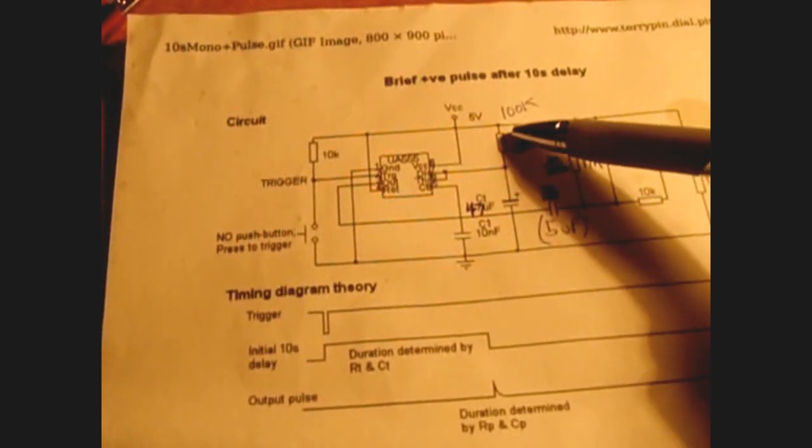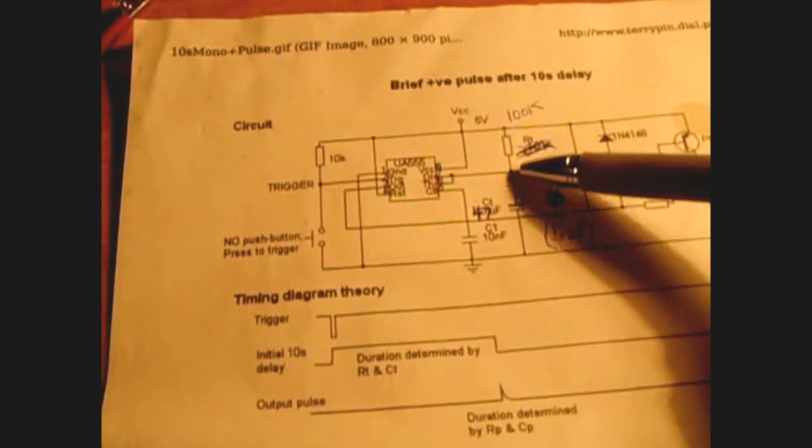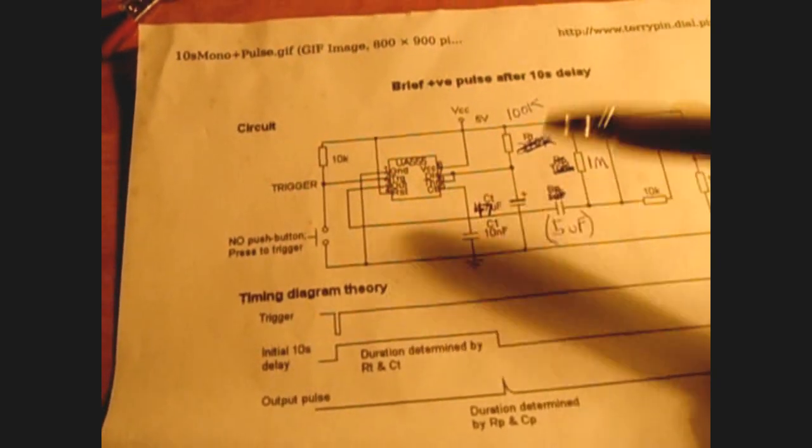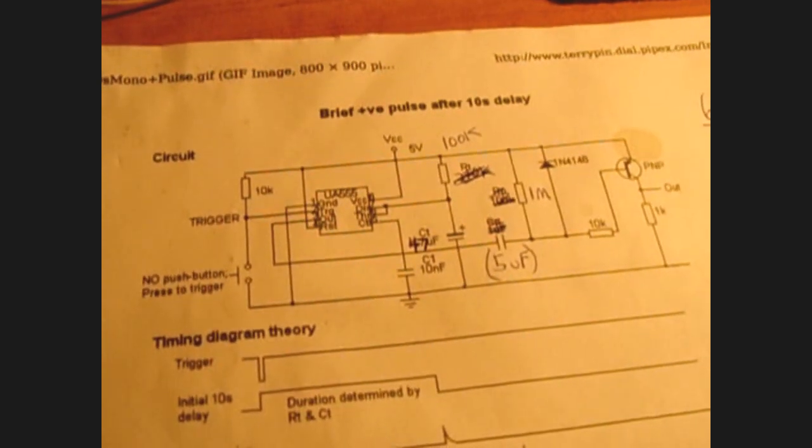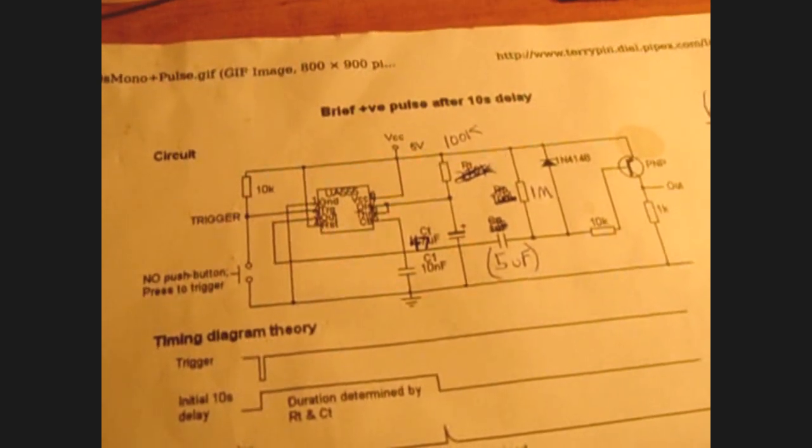Now the easiest way to increase the delay would be to make this capacitor right here, CT, a higher value. So you would increase the value of this capacitor and that would give you a longer delay before the pulse.